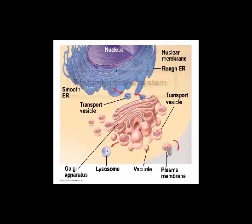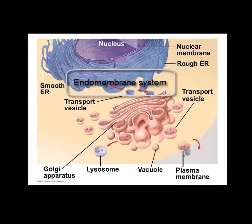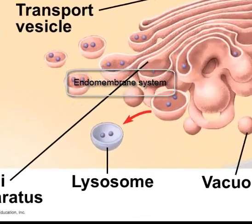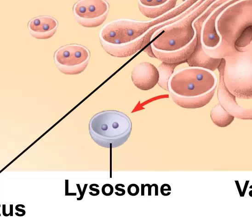Lysosomes are membrane-bound vesicles produced by the endomembrane system. They contain a variety of enzymes used in three basic ways.